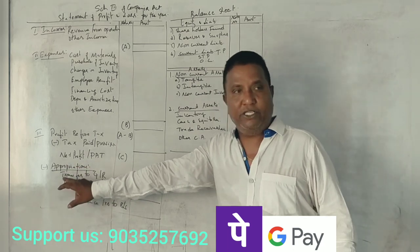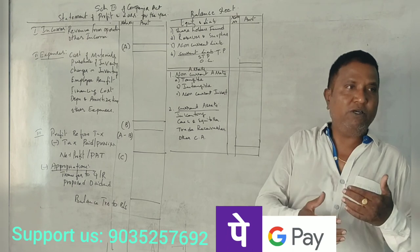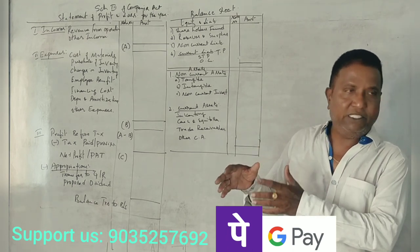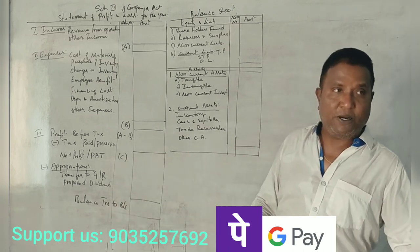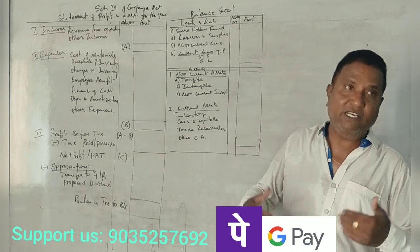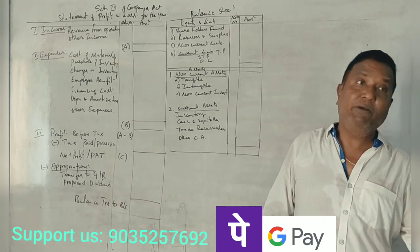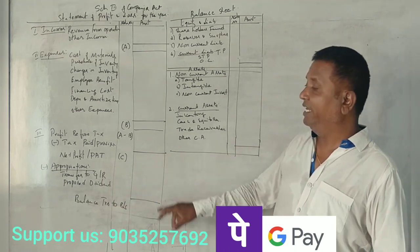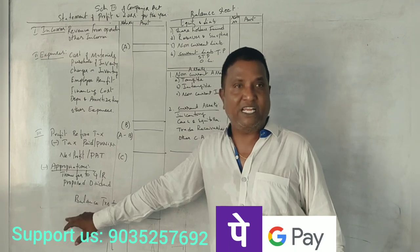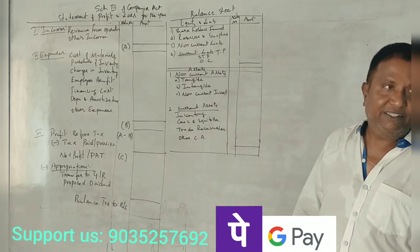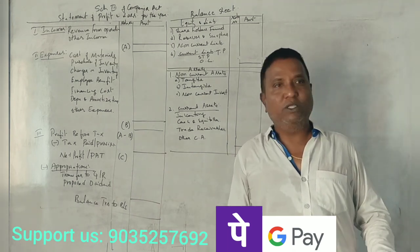Appropriations: what are appropriations? Every year's profit is reserved — transfer to general reserve, proposed dividends, interim dividends, minus balance. The remaining profit surplus is transferred to Balance Sheet. This is the Statement of Profit and Loss as per Schedule 3, Companies Act 2013.